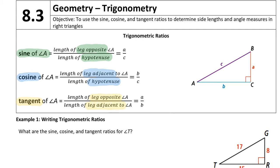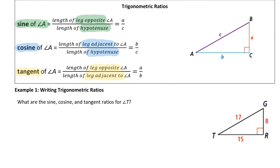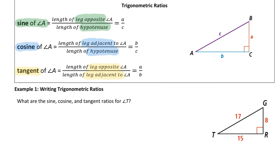We're going to get some experience writing out these ratios for different triangles. In example one, I'm going to write the sine, cosine, and tangent ratios for angle T. So I'm going to circle angle T. The sine of T equals the opposite leg over the hypotenuse. The opposite leg to T is 8, and the hypotenuse is 17.